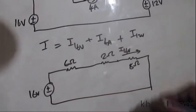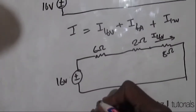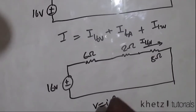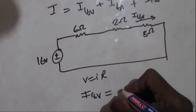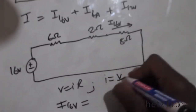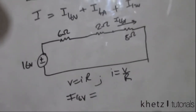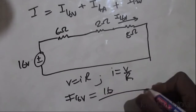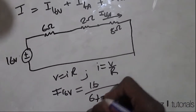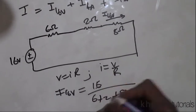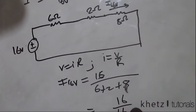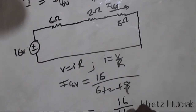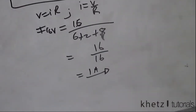Finding that current, we simply use Ohm's law: i due to the 16 volt equals V divided by R. The 16 volt contribution to i is therefore 16 volts divided by all the resistors in series — 6, 2, and 8 ohms. Adding those: 6 + 2 + 8 = 16, so i = 16/16 = 1 ampere. That is the contribution of the 16 volt source to i.